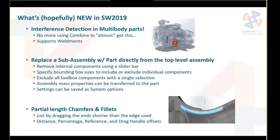Replace a sub-assembly with a part — we can do that with Save As, but this will be directly from the top-level assembly tree. And at the bottom, partial length chamfers and fillets: similar to how you can edit a sheet metal flange profile and drag it shorter to not run the full length, you'll be able to grab a little ball on the ends of a selected edge and drag back. There are settings for distance and percentage and drag handles. Really neat.